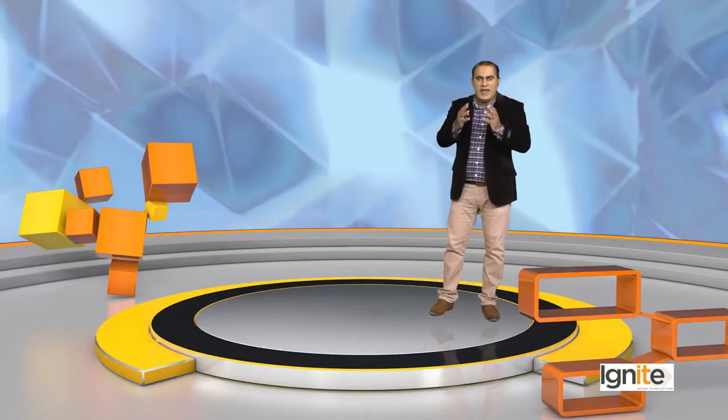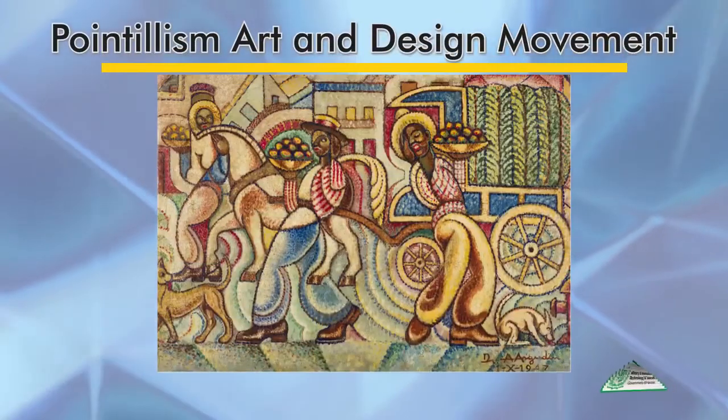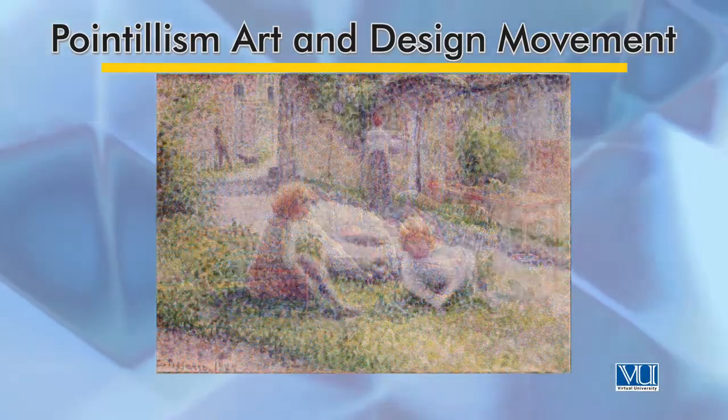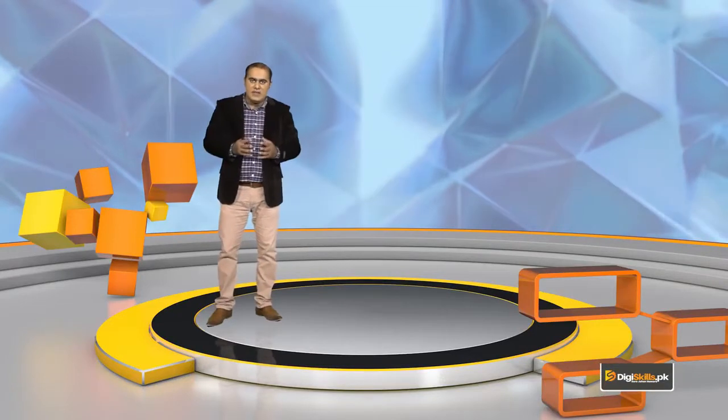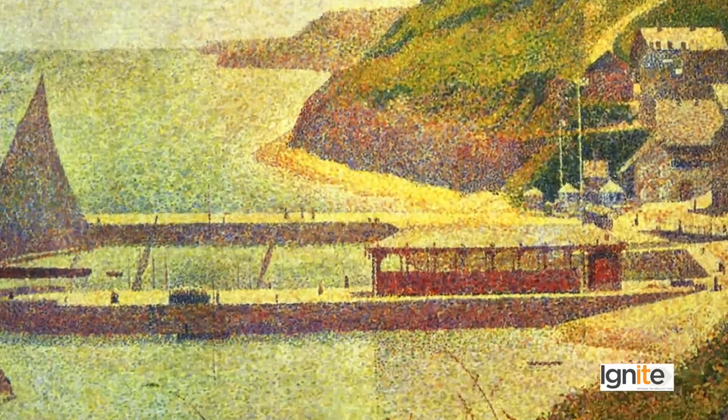Baba Bulleh Shah conveyed that everything in the world depends on a single point. In the French language, the word for dot is 'point,' and this word is the basis of an entire art movement called Pointillism. Artists and designers working in Pointillism create their paintings and art pieces using small and large dots. For example, George Seurat, who is a famous painter — if you look at his paintings from a distance and then up close, you will see that he made the entire painting using various small and large dots.